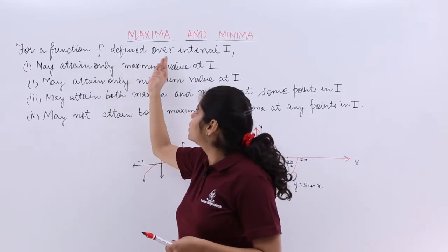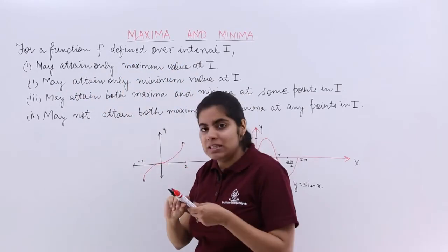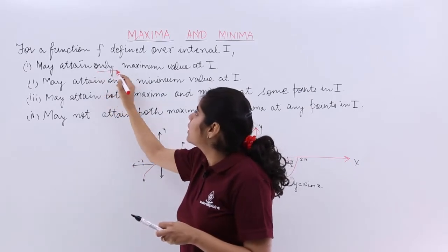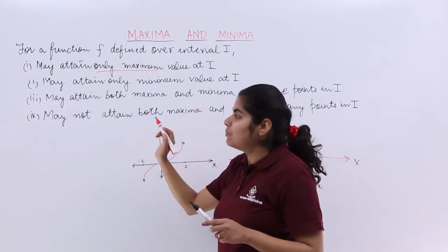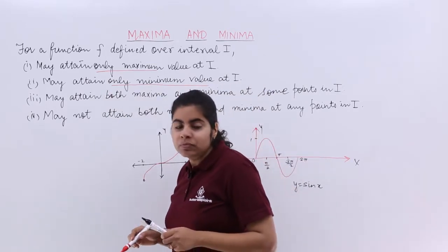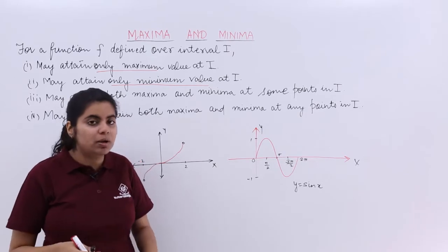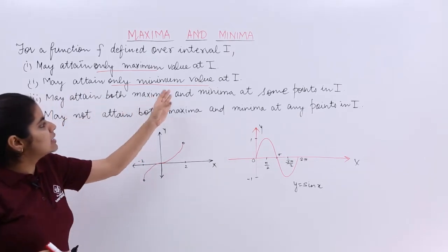It says that for a function f defined over an interval i it may attain only maximum. Only maximum is possible and no minimum value, that means it may attain only minimum value even that is possible. Now in some cases both Maxima and Minima may exist which is what is written. It may attain both Maxima and Minima.